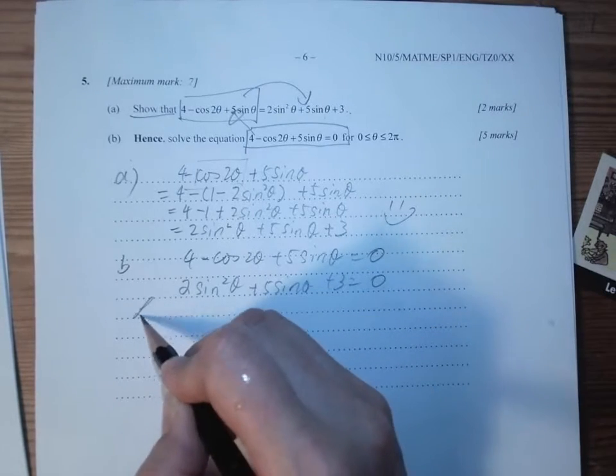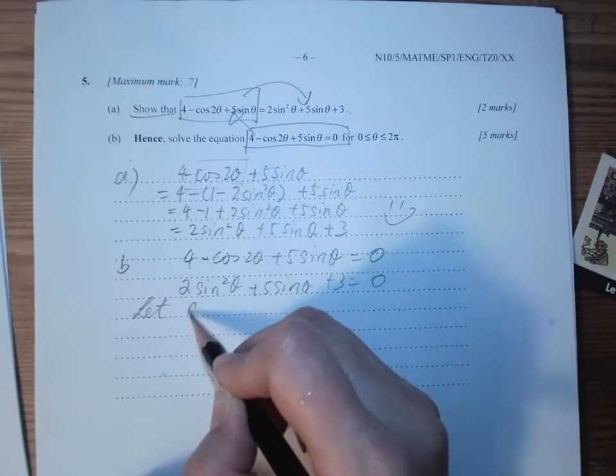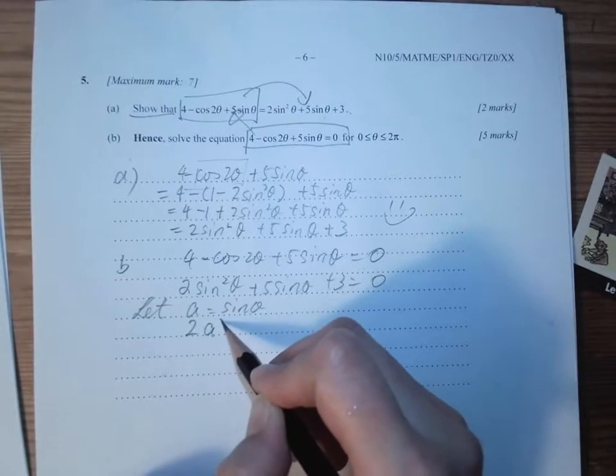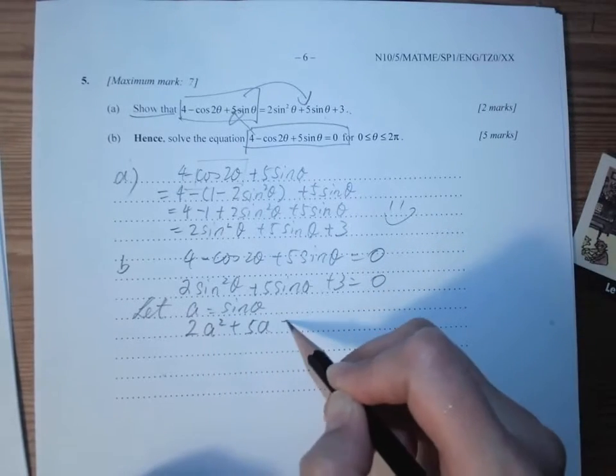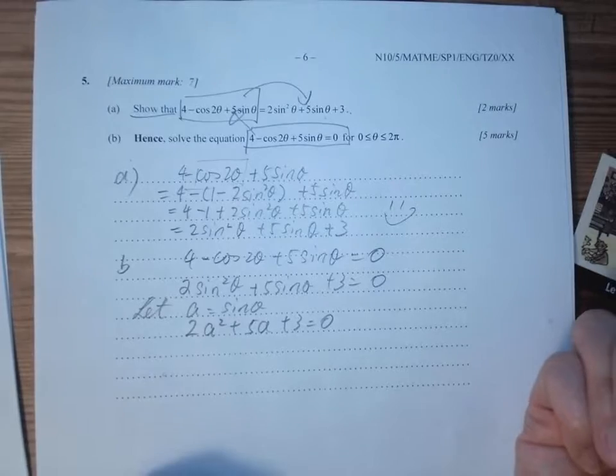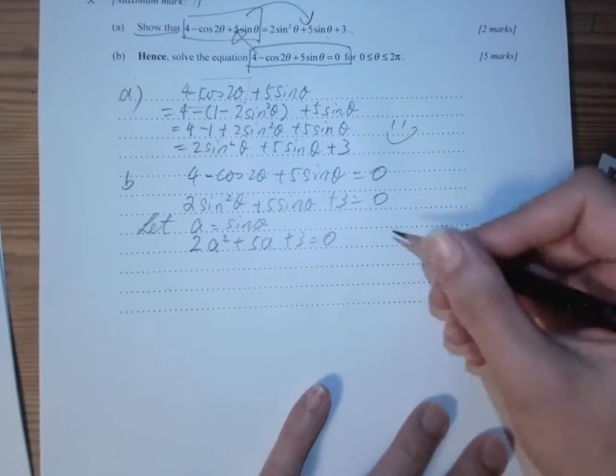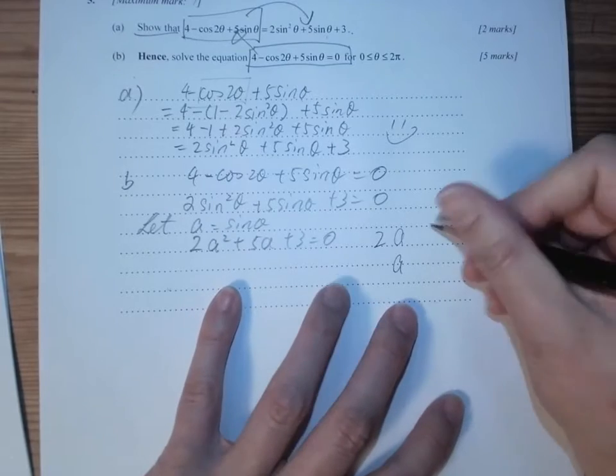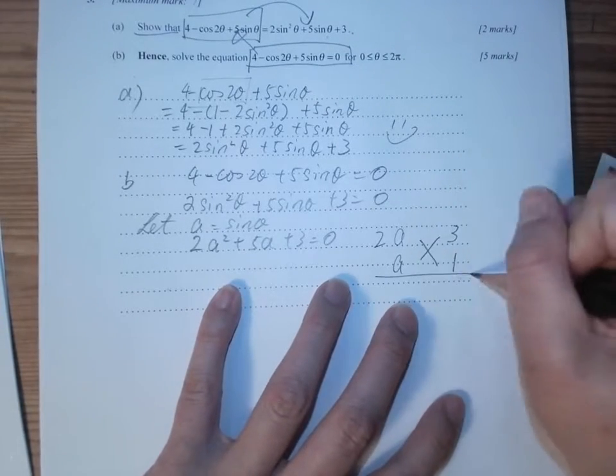This is a quadratic. But to let us feel better, I will have a = sinθ, and then we have 2a² + 5a + 3 = 0. That makes us feel so much better. Then we have: 2a times a equals 2a², and 3 and 1 cross multiply, we got 3a + 2a = 5a. Nice.